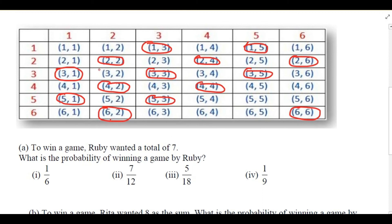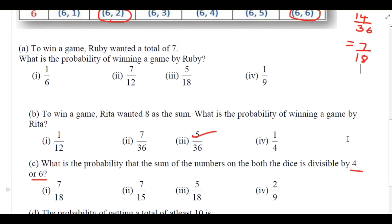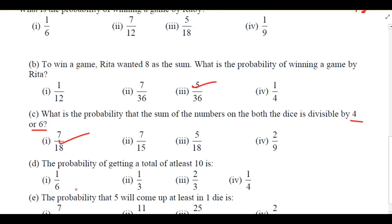Counting all the favorable outcomes, the total is 14. So 14 by 36 — when you simplify it, 14 by 36 is not directly in the options, so we reduce it. 14 divided by 2 is 7, and 36 divided by 2 is 18. So the answer is 7 by 18.